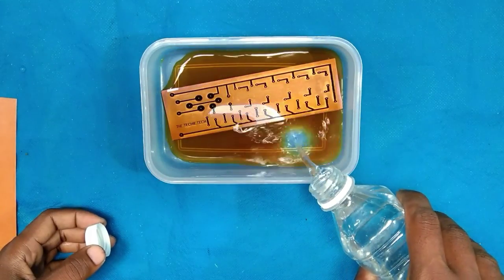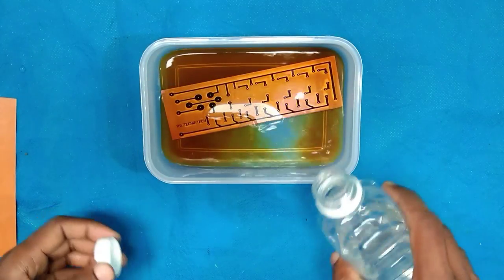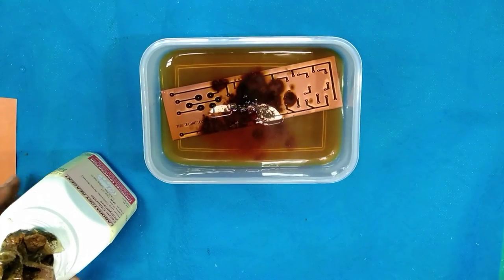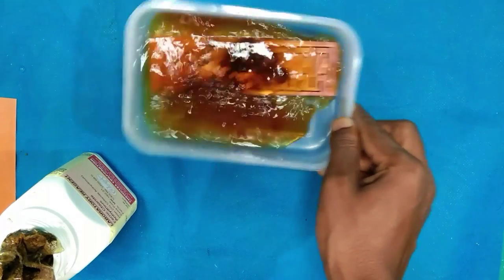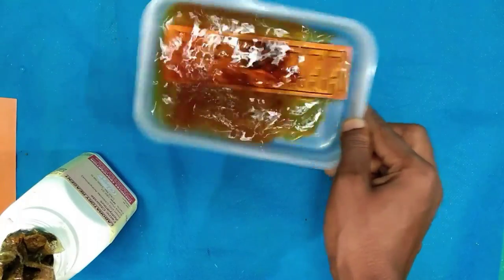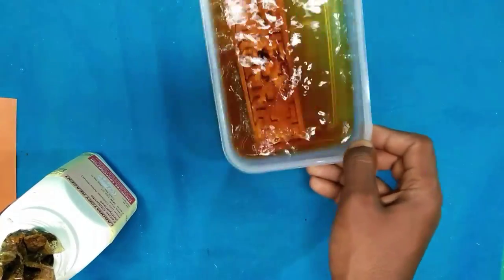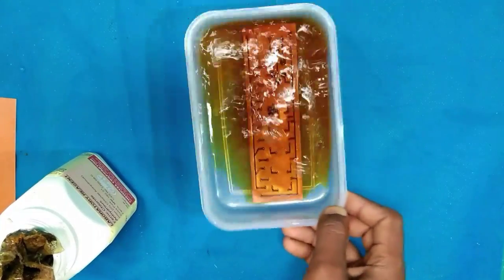Add more water and ferric chloride if needed. Shake the vessel thoroughly till the reaction takes place. It will take about 5 to 10 minutes to fully etch according to the size of board and solution density. Keep shaking the vessel. Shaking helps to etch fast.